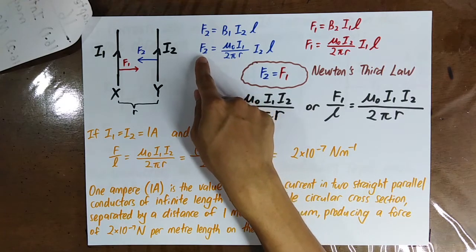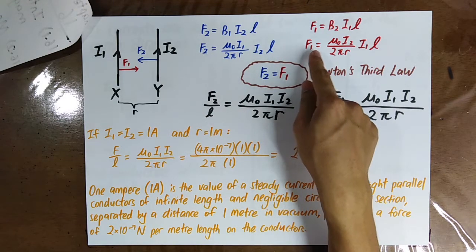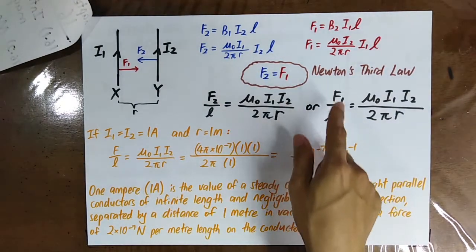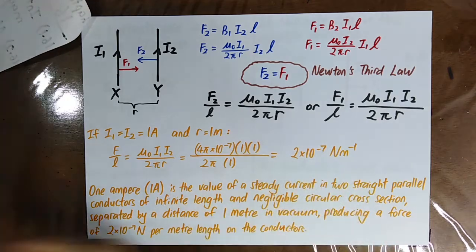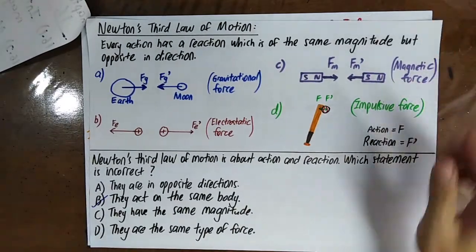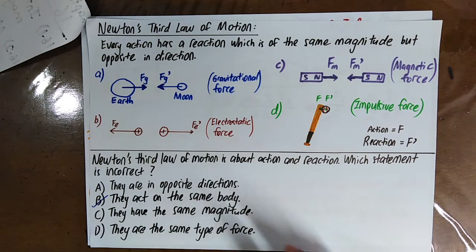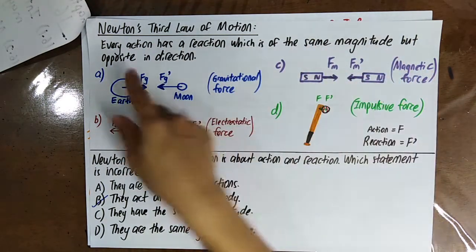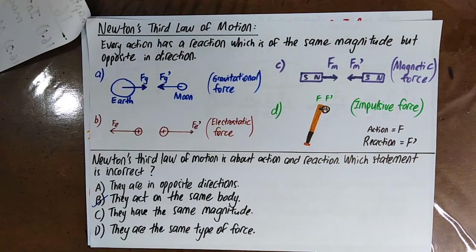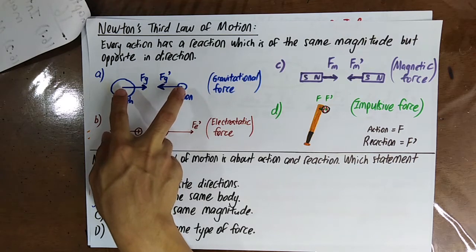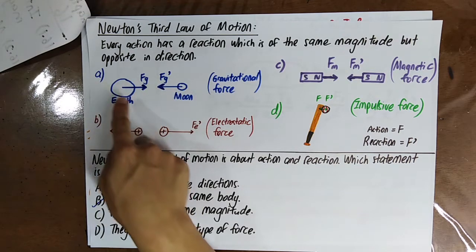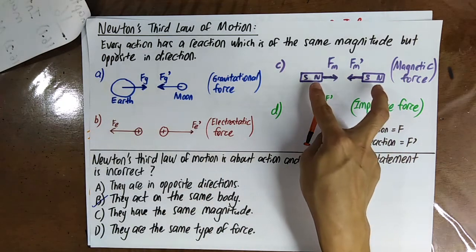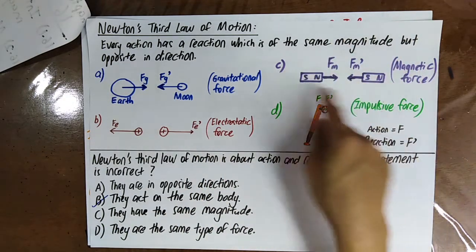The magnitude of F2 equals the magnitude of F1, consistent with Newton's Third Law of motion: every action has a reaction of the same magnitude but opposite in direction. For example, two masses exert equal and opposite gravitational forces on each other, and two bar magnets exert equal and opposite magnetic forces.